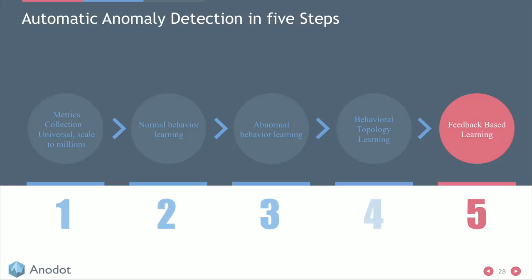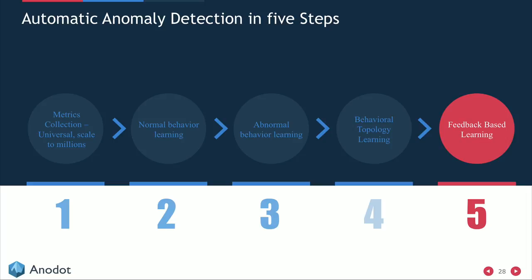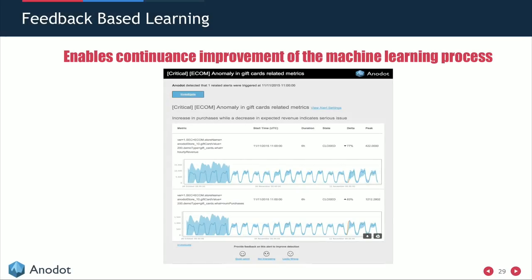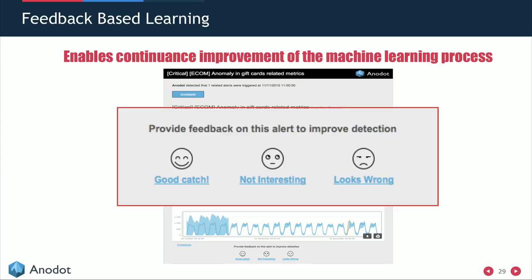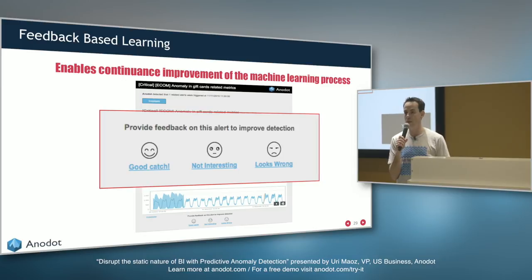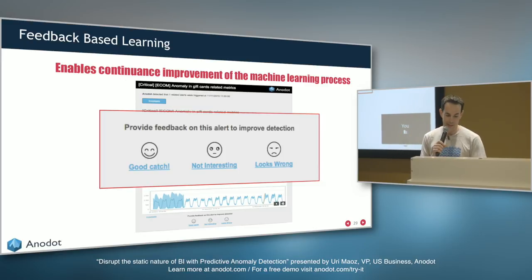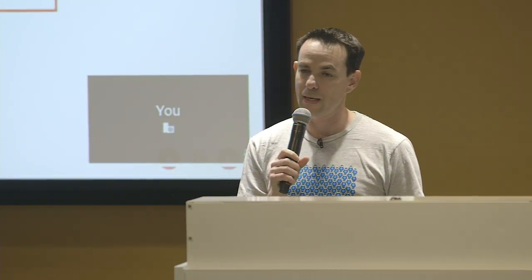All these steps should run in unsupervised mode with no manual definitions by the user — just send the data. But you also want to close the loop with feedback-based learning. When a user receives an alert, they can indicate 'good catch,' 'not interesting,' or 'looks wrong,' and that input is fed back to the model to optimize future learning. To recap the five steps: metric collection, normal behavior learning, abnormal behavior learning, behavioral topology learning, and feedback-based learning.